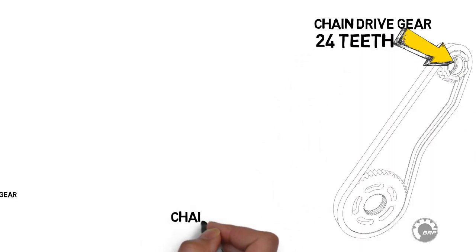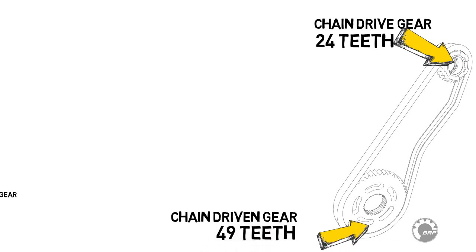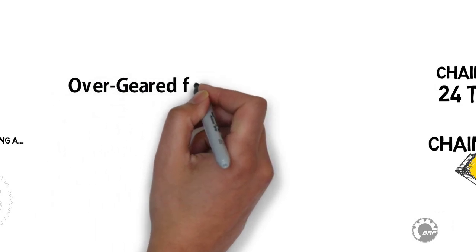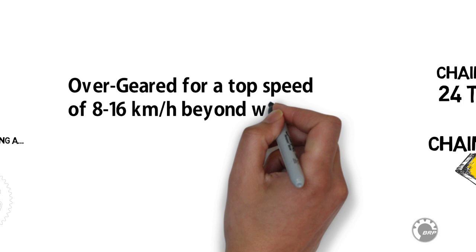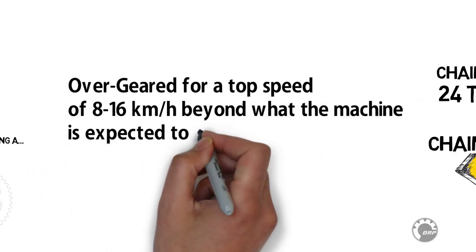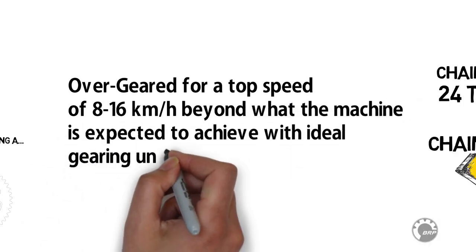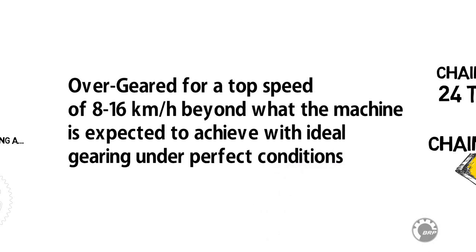Most new snowmobiles ship from the factory with reasonably high secondary gearing. In fact, most are slightly over-geared, meaning they are geared for a top speed of 5-10 mph or 8-16 kmph beyond what the machine is expected to achieve with ideal gearing under perfect conditions.